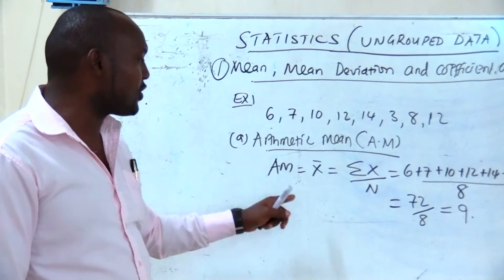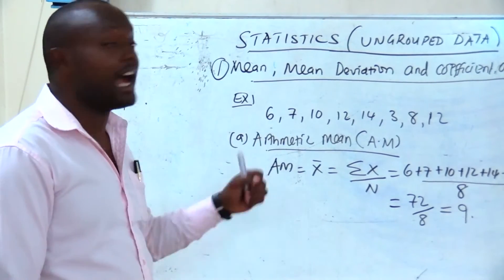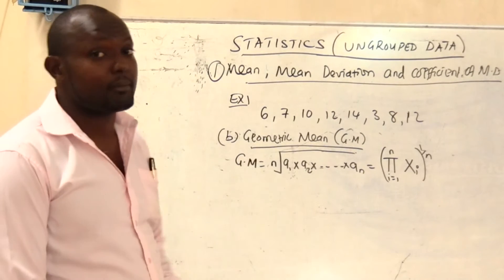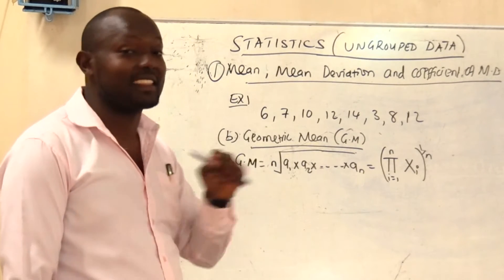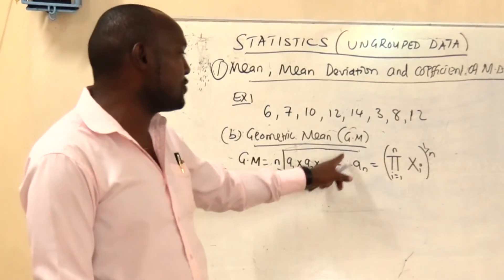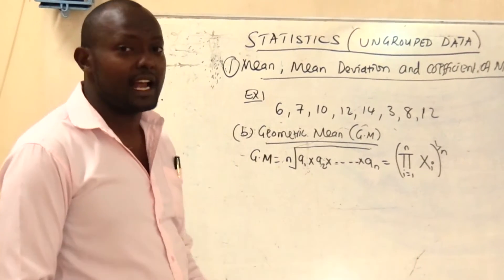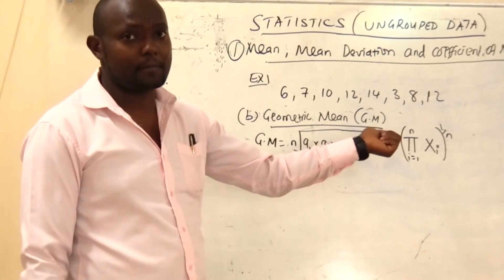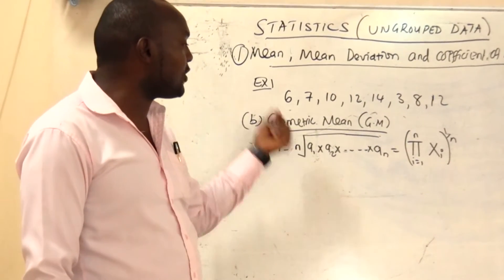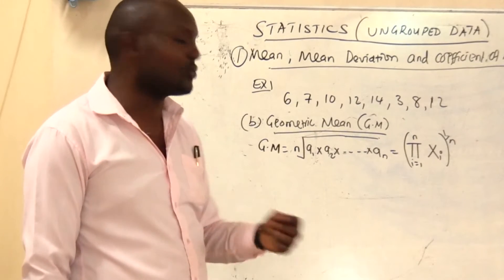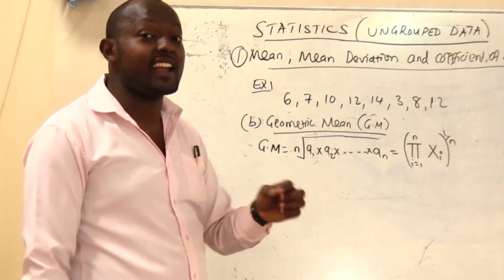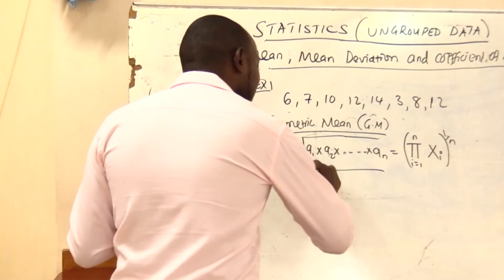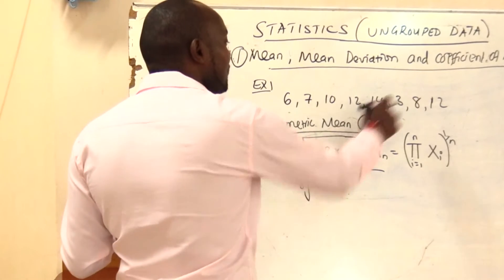Now let's look at another method — how do we calculate geometric mean and harmonic mean. Using the same example, we want to calculate geometric mean. The formula for GM is the nth root of the product of the data. In this case, it is the product of the data, then you get the nth root, where n is the number of data. So here it will be the 8th root of the product.